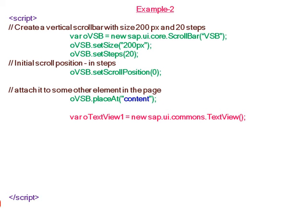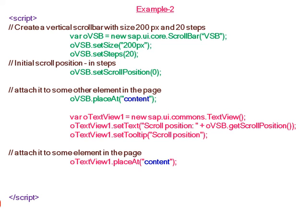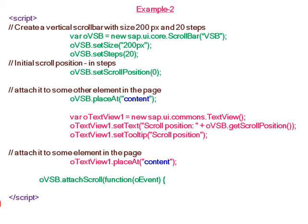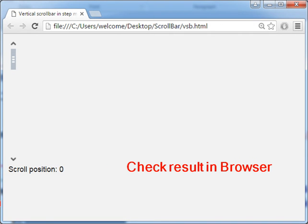We attach the vertical scroll bar to the div element. We create a new text view with text showing the scroll position plus the exact position of the vertical scroll bar, with tooltip 'scroll position', and attach this text view to the same div element. In the event handler, we write a function so that when the user moves the scroll bar, the exact position is displayed. Then we check the result in the browser.